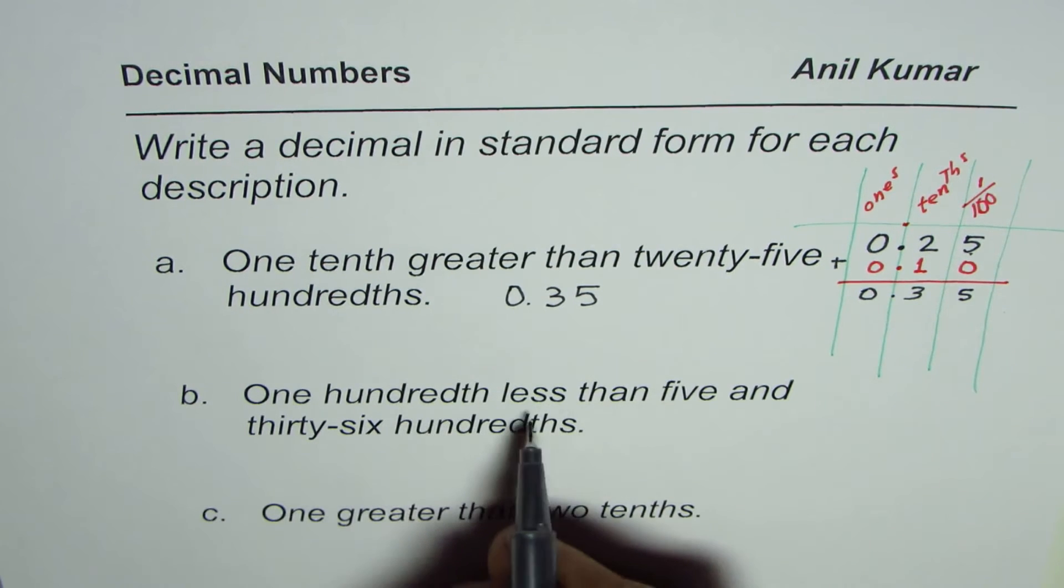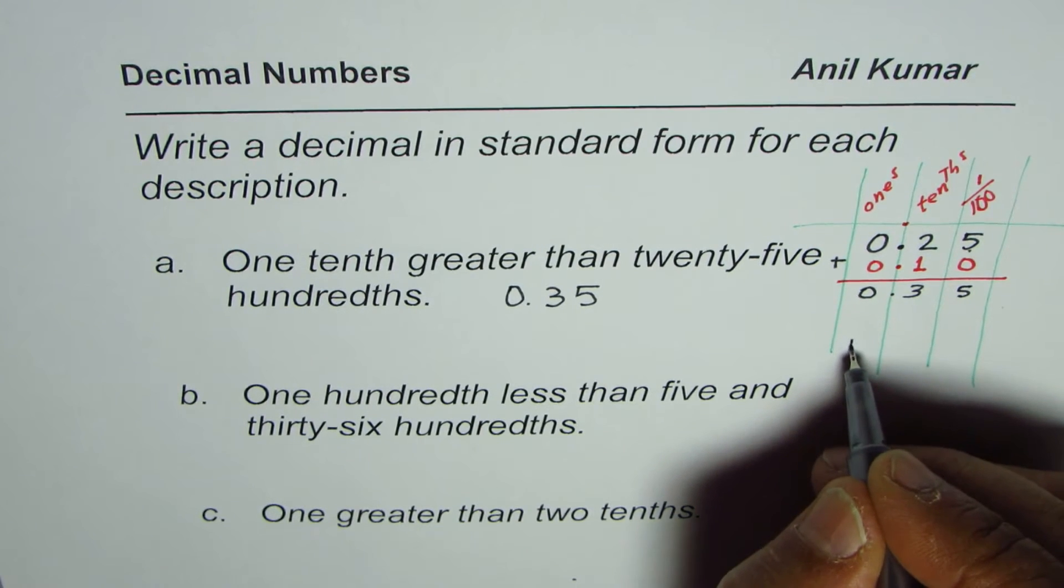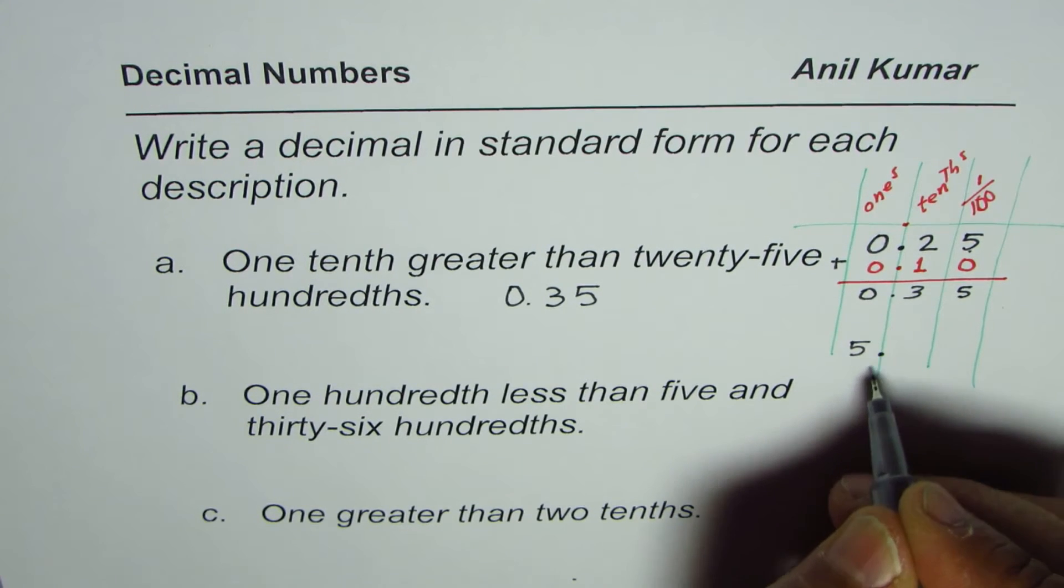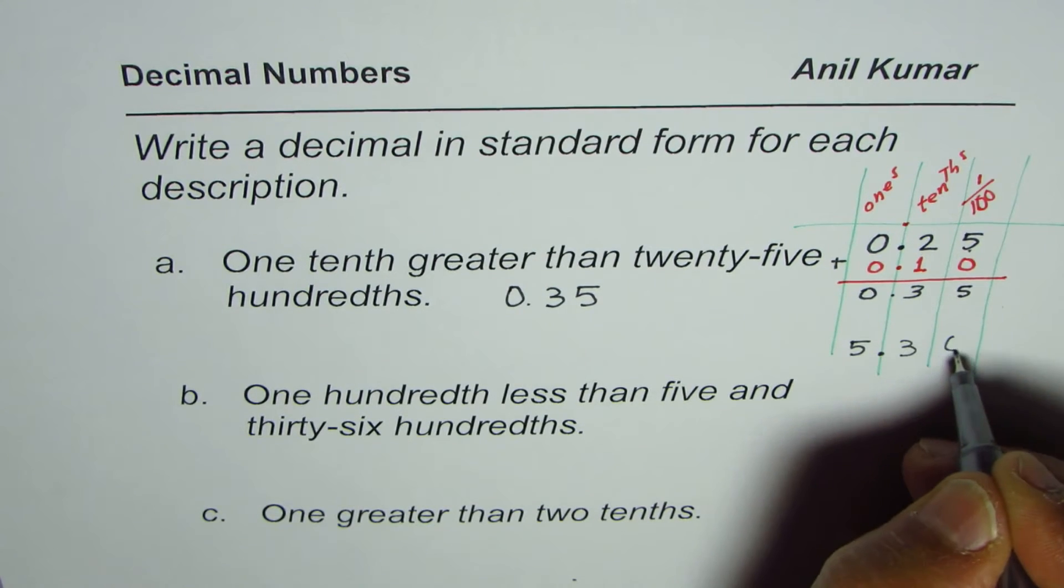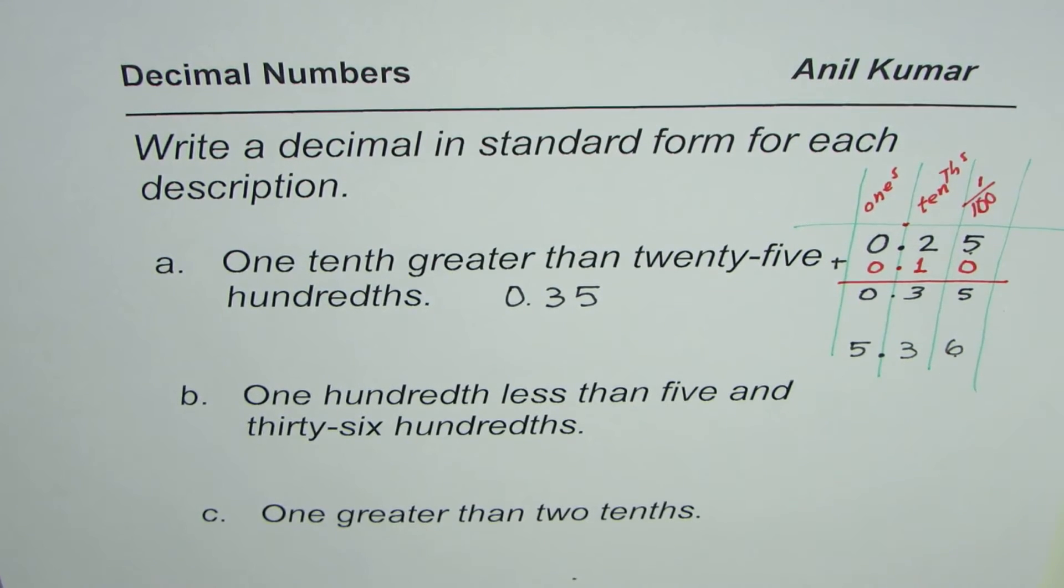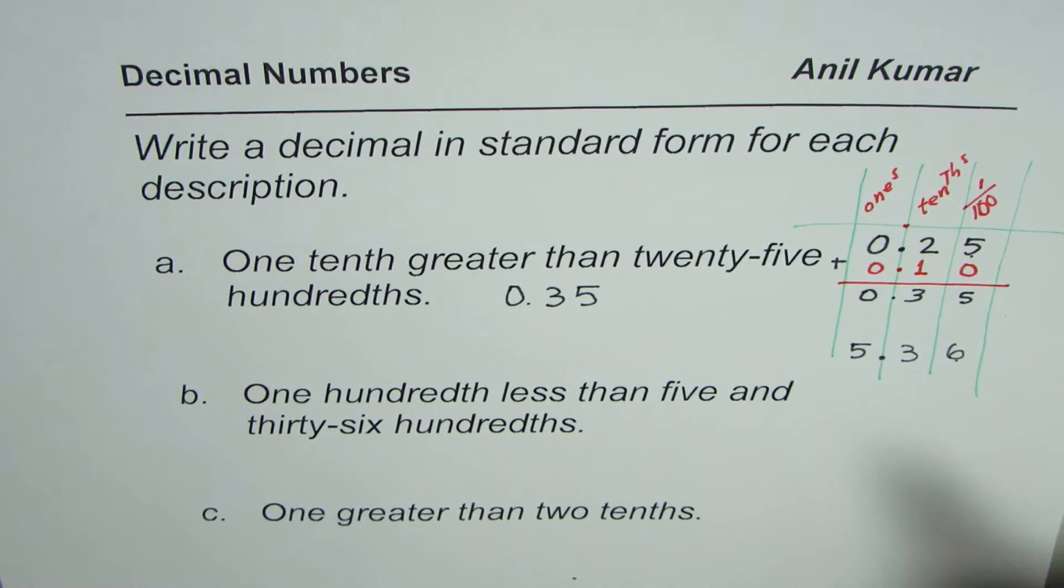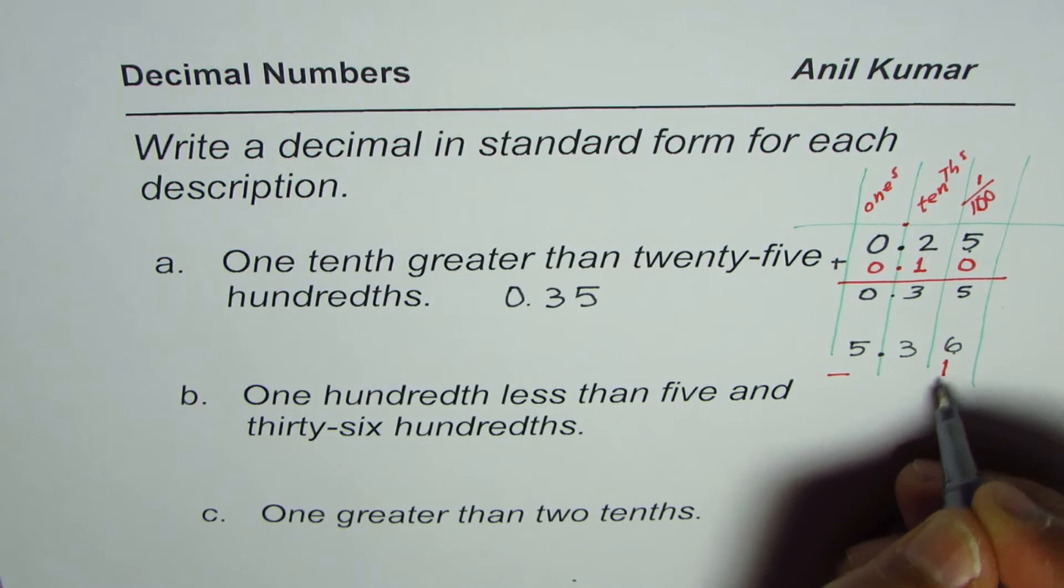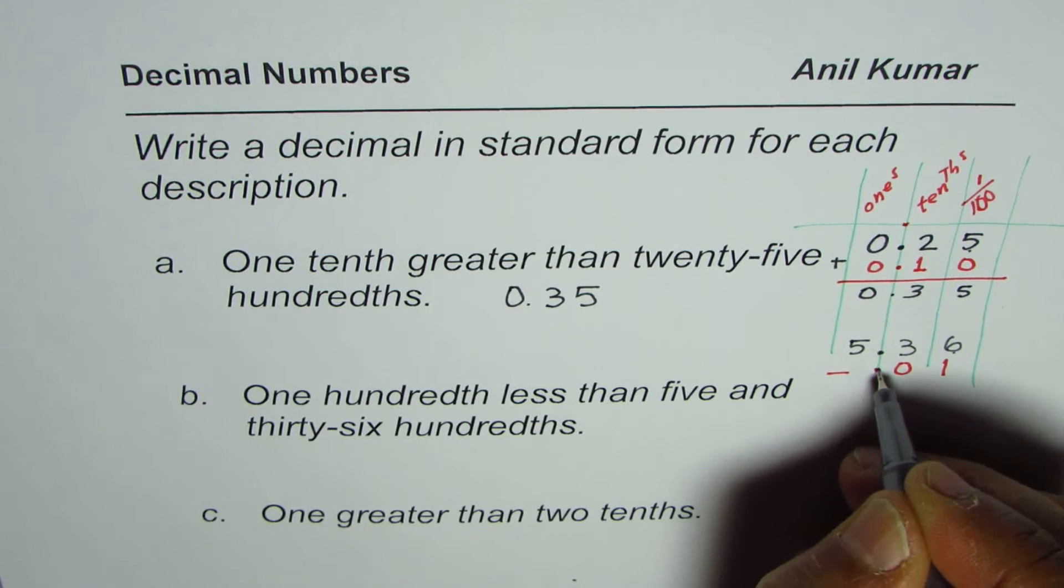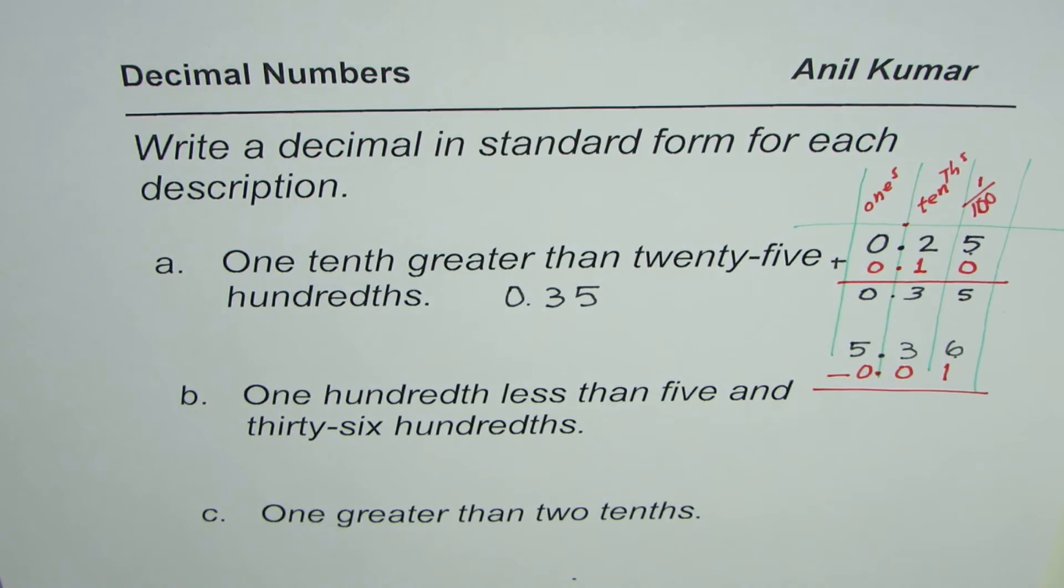One-hundredth less than five and thirty-six hundredths. So this means five and, which means decimal, thirty-six hundredths. It ends at hundredths. We are saying one-hundredth less than. That means this time, we have to take away one-hundredth. That is the hundredths position. So others are zero. Let us do this and find the answer.